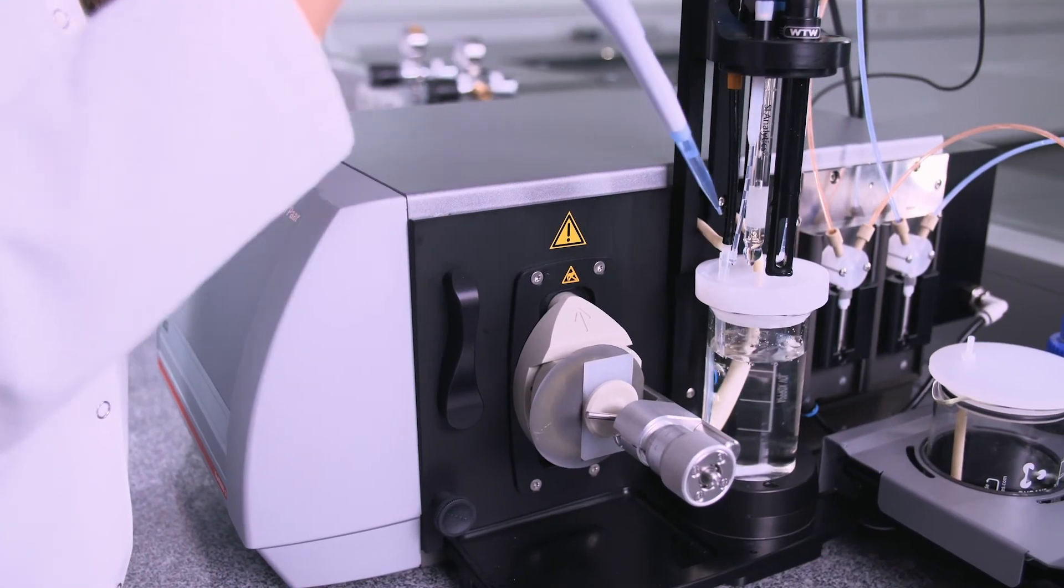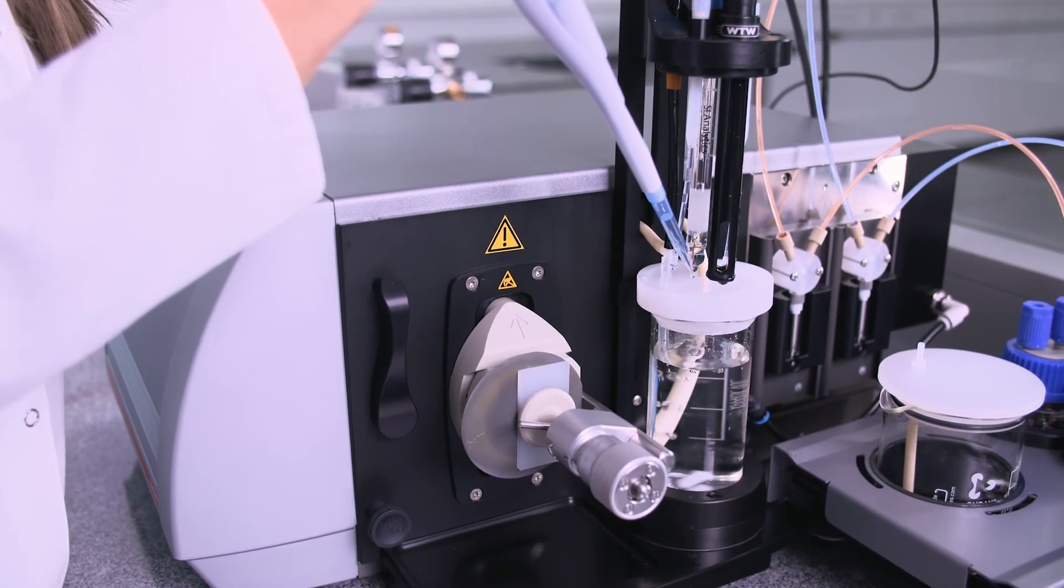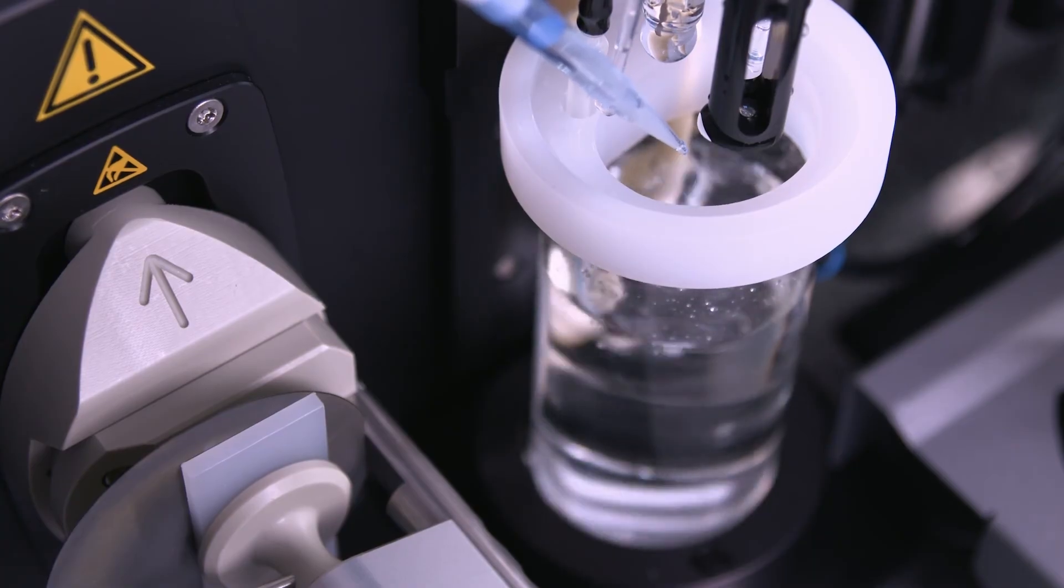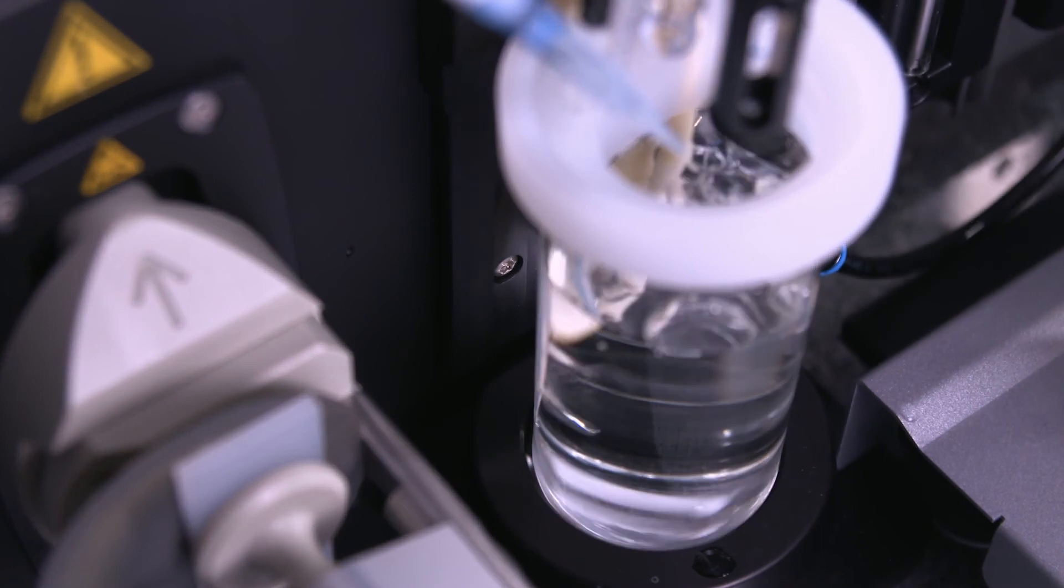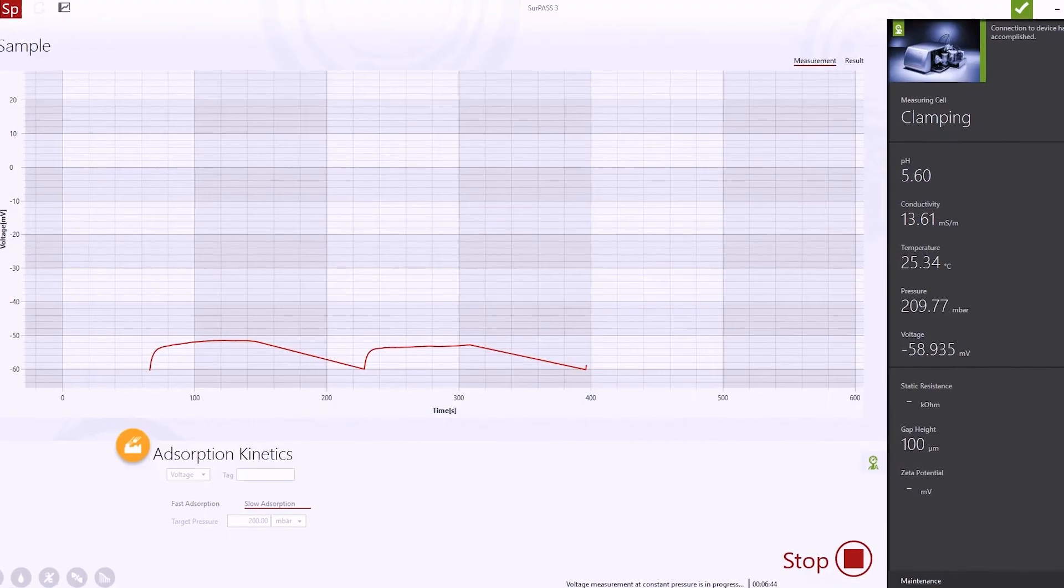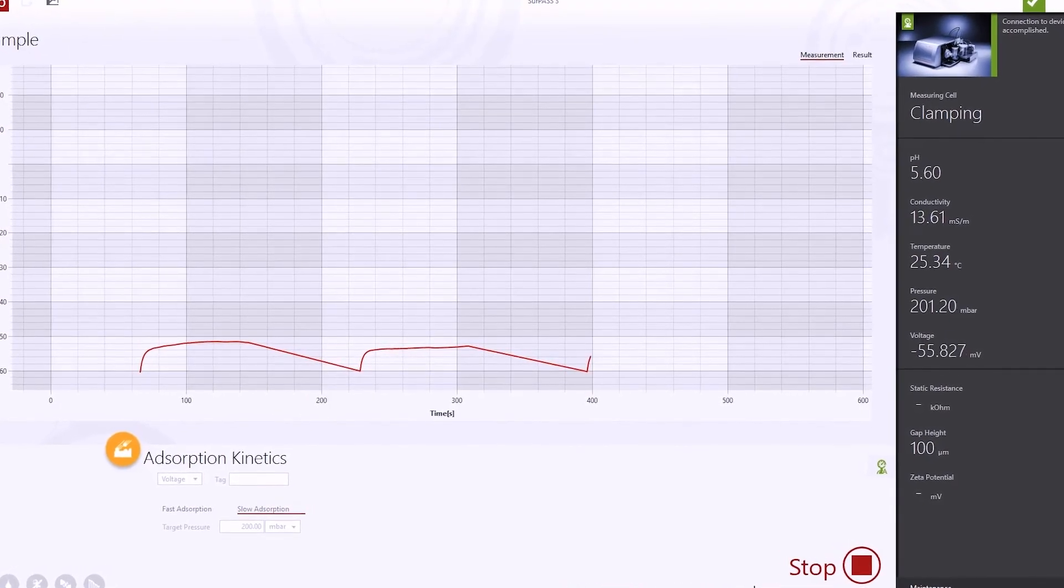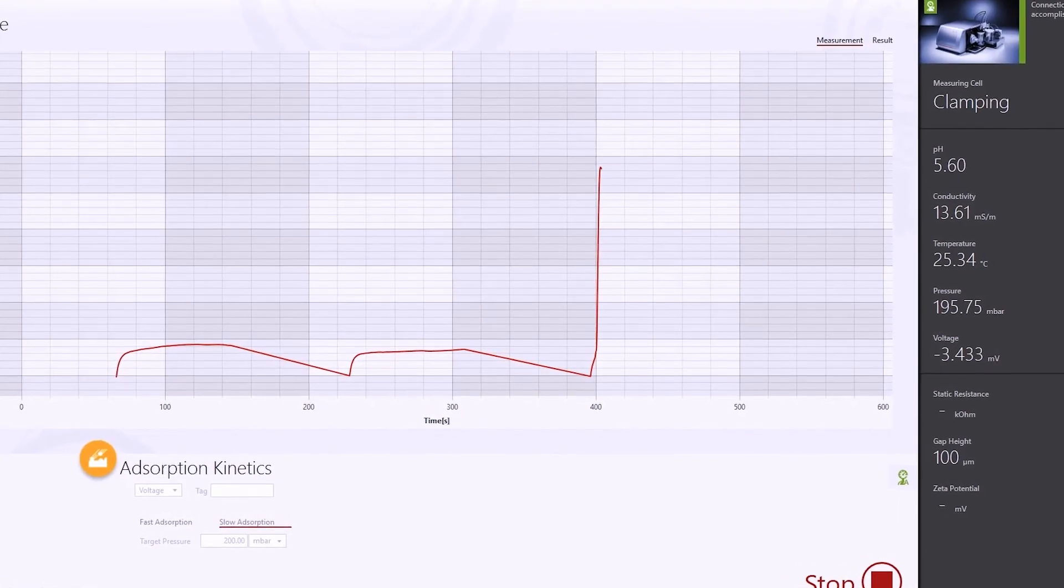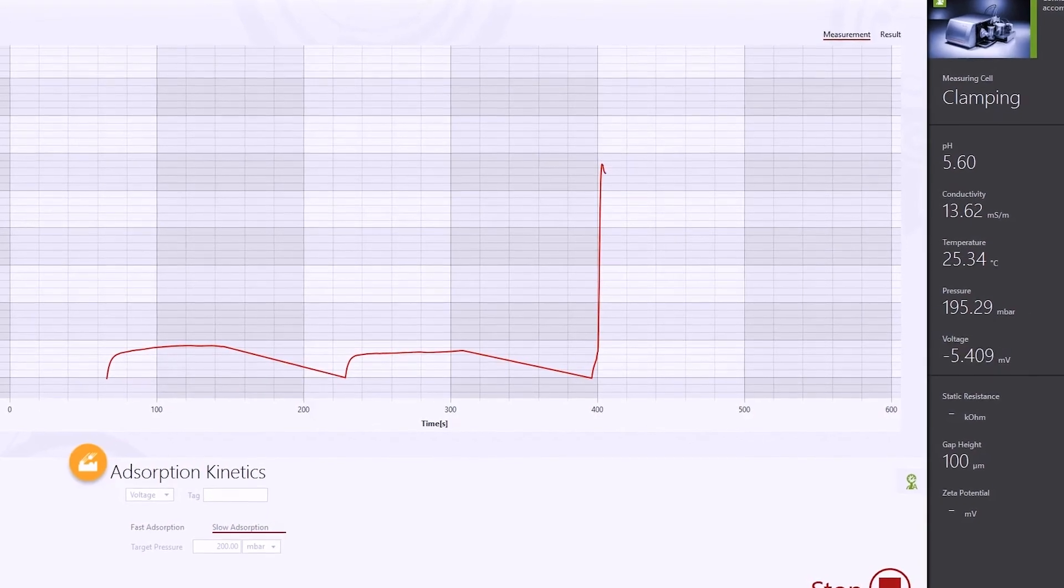After recording a baseline using pure electrolyte solution, small quantities of the adsorbent are added to the electrolyte solution. Throughout the whole measurement, N2 purges the electrolyte solution to avoid an adverse effect of dissolved CO2 and to ensure reliable results.